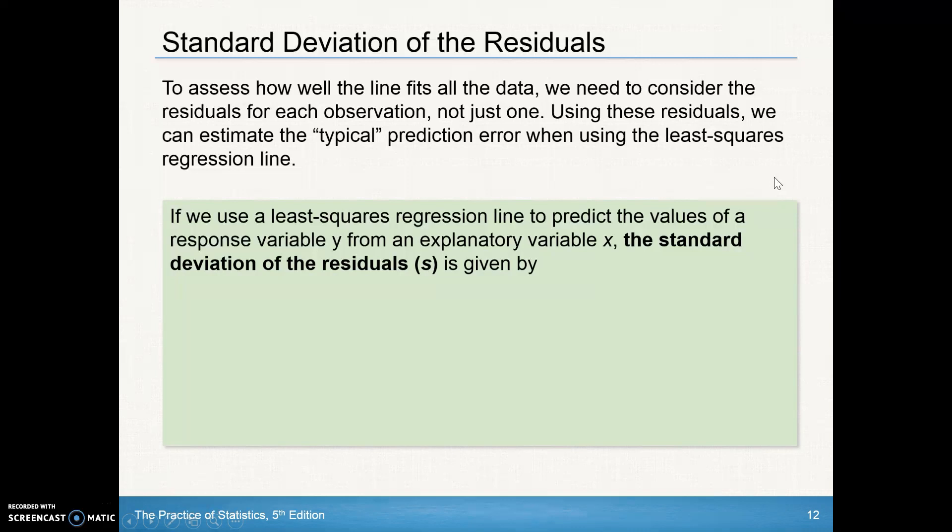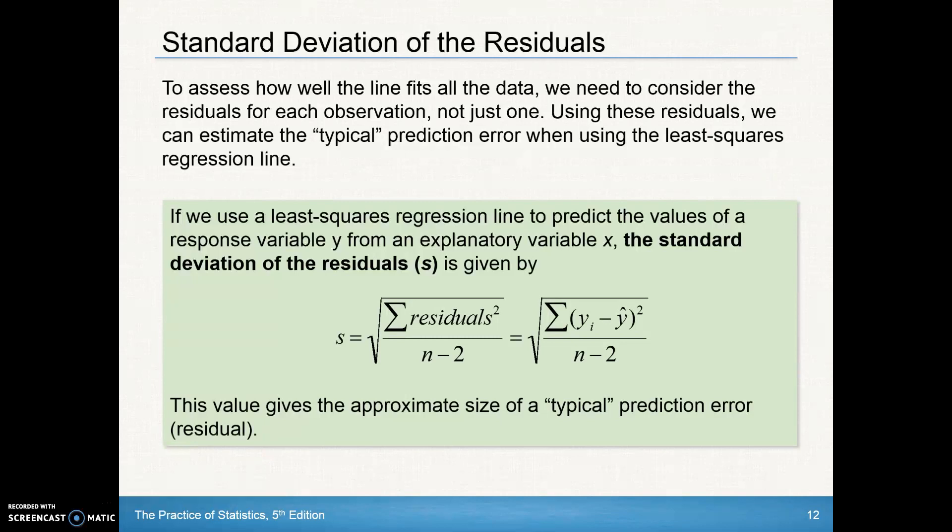If we use a least squares regression line to predict the values of a response variable y from an explanatory variable x, the standard deviation of the residuals is given by this formula right here. And that value gives the approximate size of a typical prediction error.